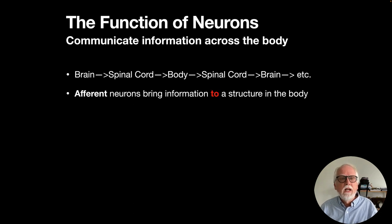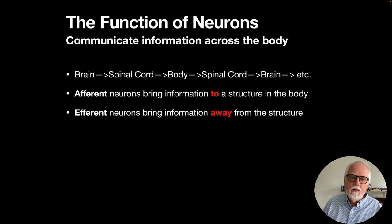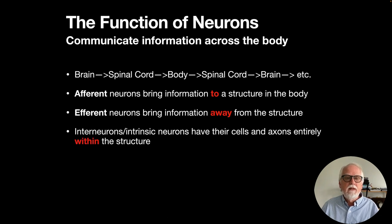A little terminology: afferent neurons bring information to a structure in the body — if you're going from the brain or spinal cord out to a body structure, those neurons are afferent. Efferent neurons bring information away from the structure, going from a body part back toward the brain. We also have interneurons, or intrinsic neurons, whose cell bodies and axons are entirely within a structure such as the spinal cord or brain.